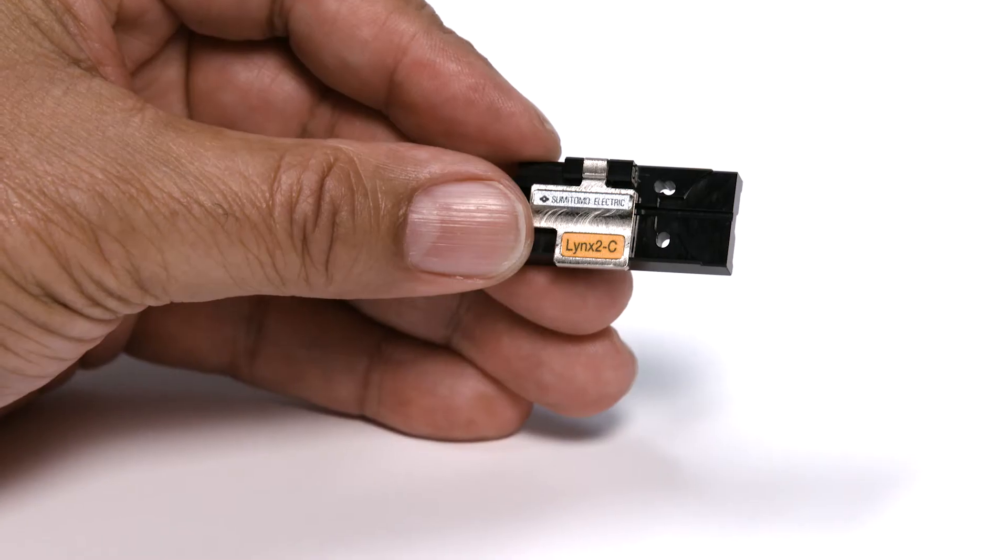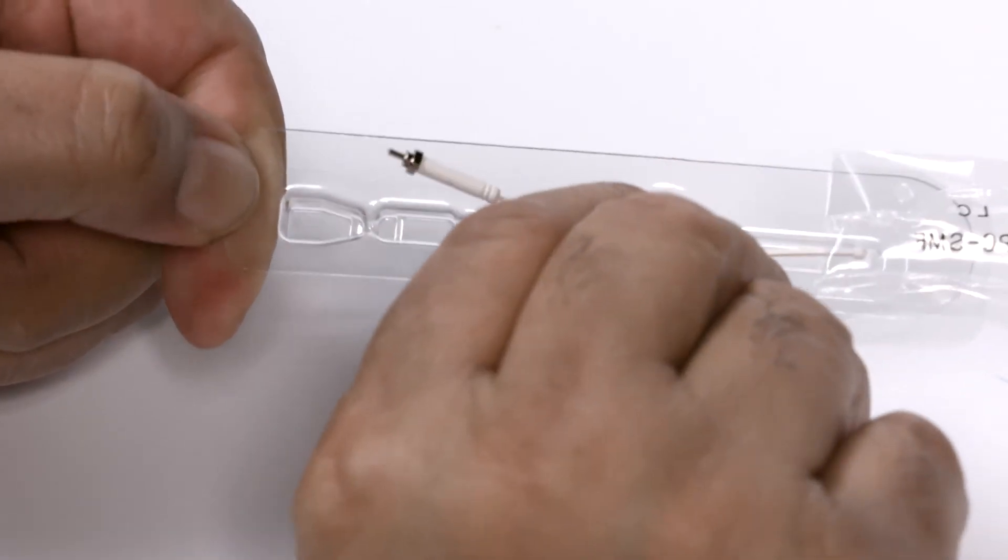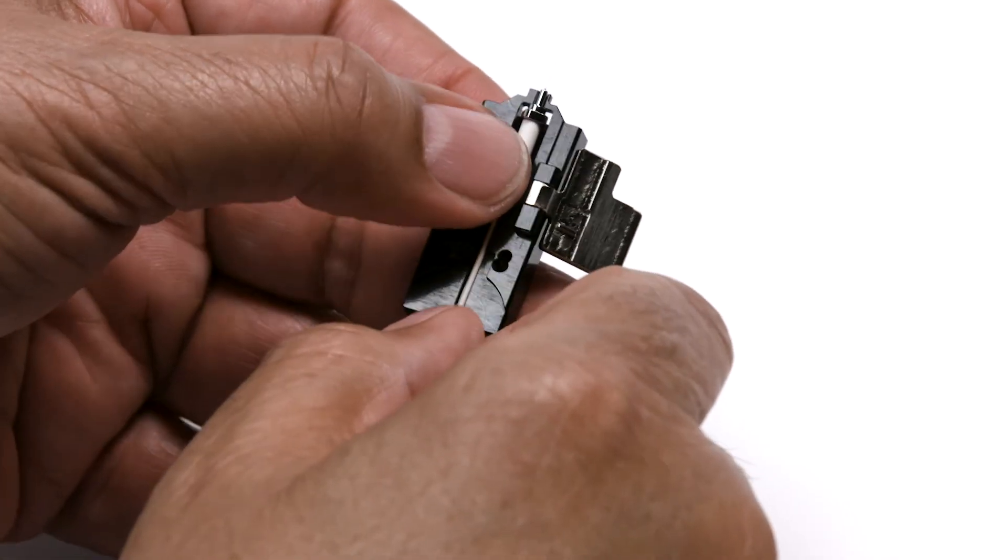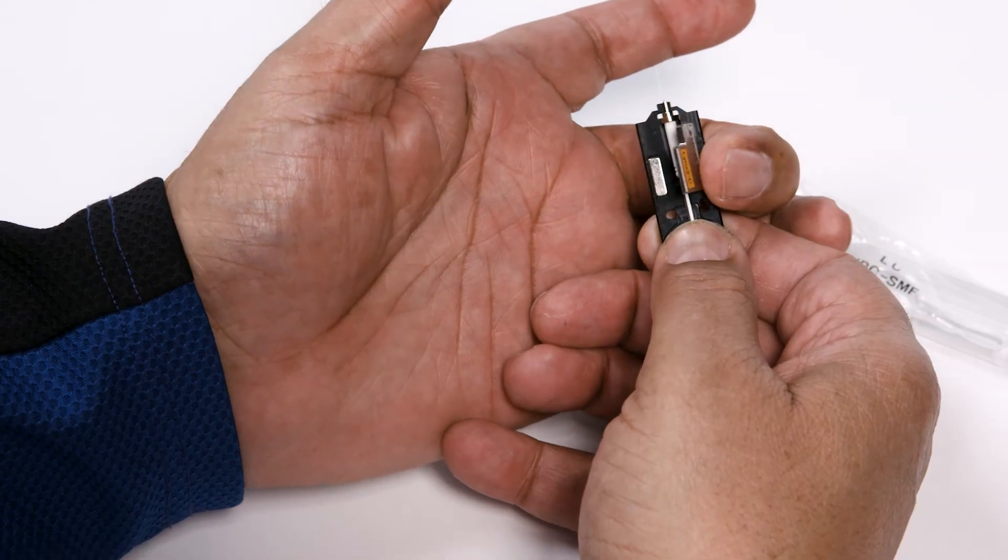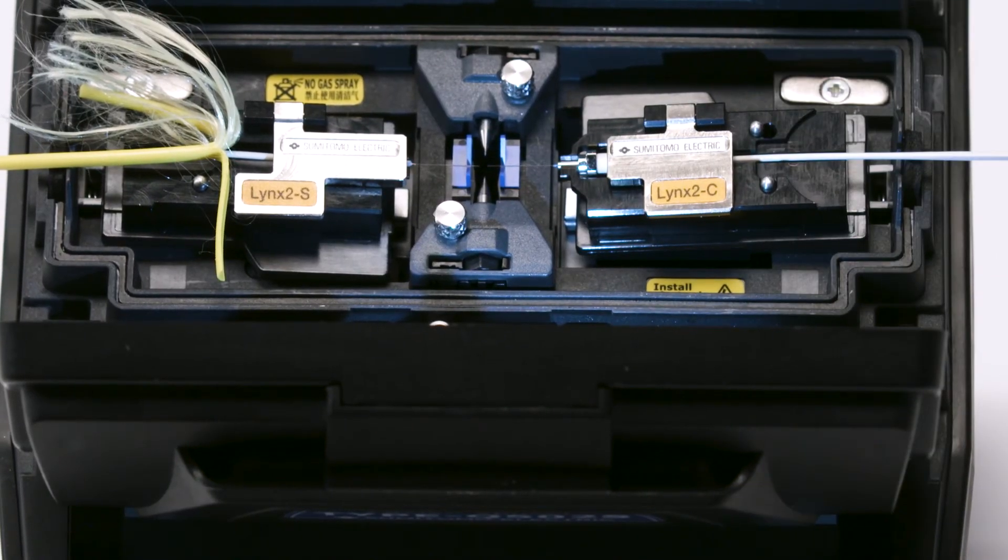Now let's prepare the ferrule holder for the right side. Open a holder. Carefully remove the ferrule from its protective packaging. Immediately place the ferrule into the ferrule holder. Place the ferrule holder with the ferrule into the splicer.